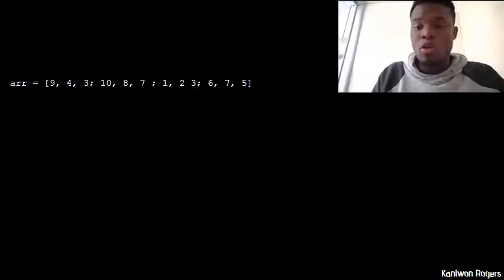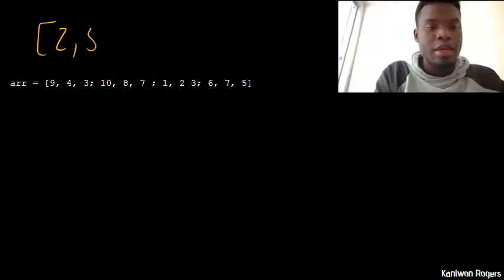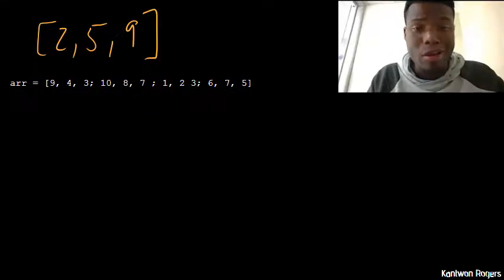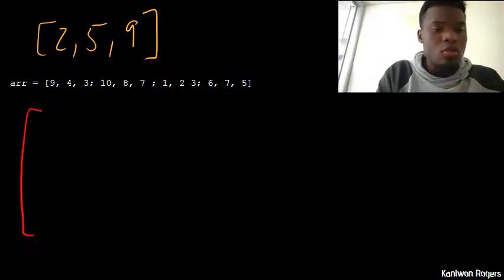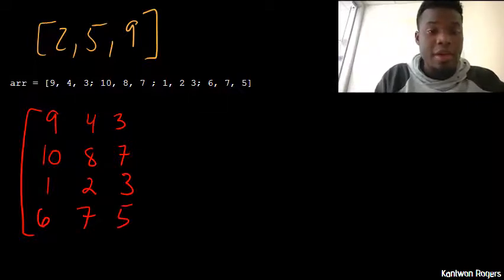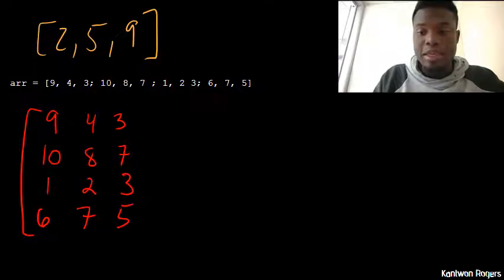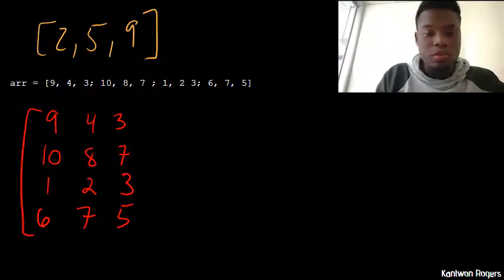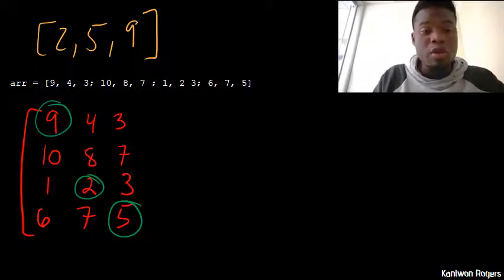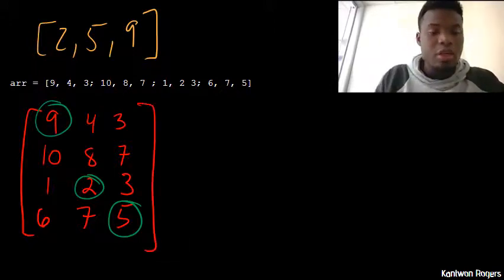So let's go over this example. So we wanted to create a vector that was 2, 5, and 9 by indexing this array using linear indices. So our first step here is to first write out what this array looks like. So our first row here is 9, 4, 3. Our second row is 10, 8, 7. Our third row is 1, 2, 3. And our last row is 6, 7, and 5. So we want to access the 2, the 5, and the 9 in that order. So remember, I didn't close off my array. So remember, we want to do these with linear indices. So let's list out all the linear indices here.